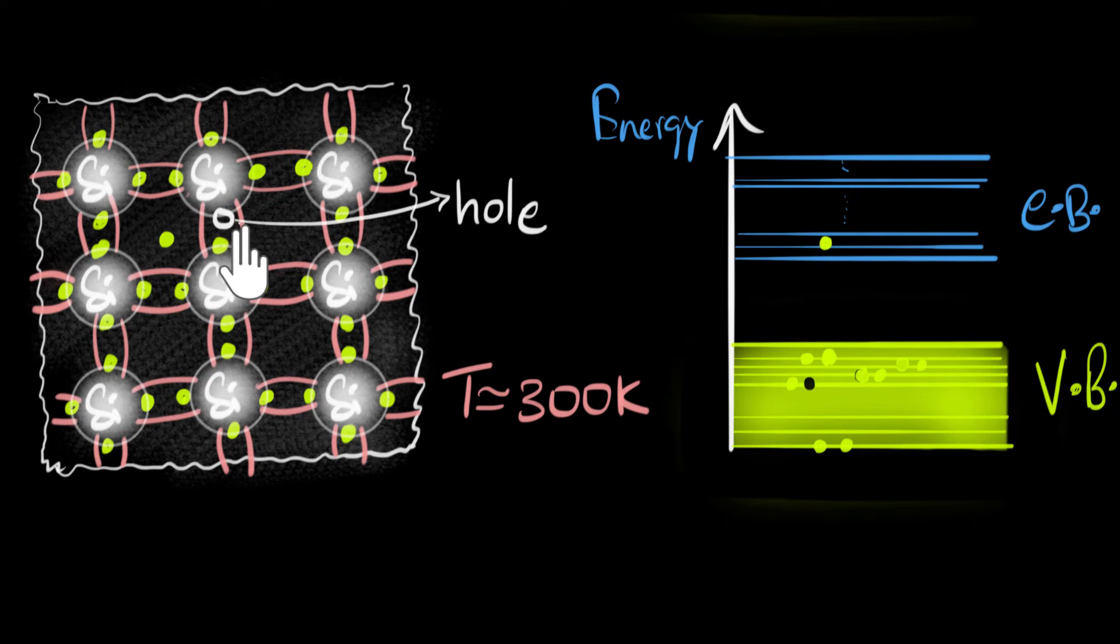And guess what? These holes act like positive charge carriers, and here's why. See, imagine if you were to put an electric field like this, then notice this electron, this free electron will accelerate this way, right? It will accelerate in this direction.